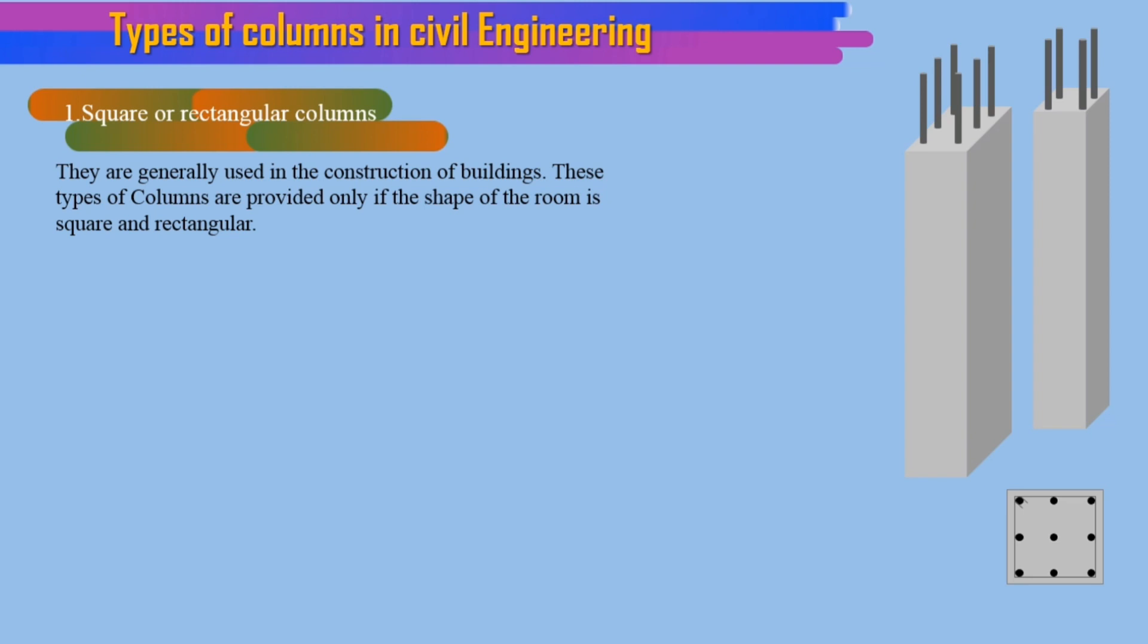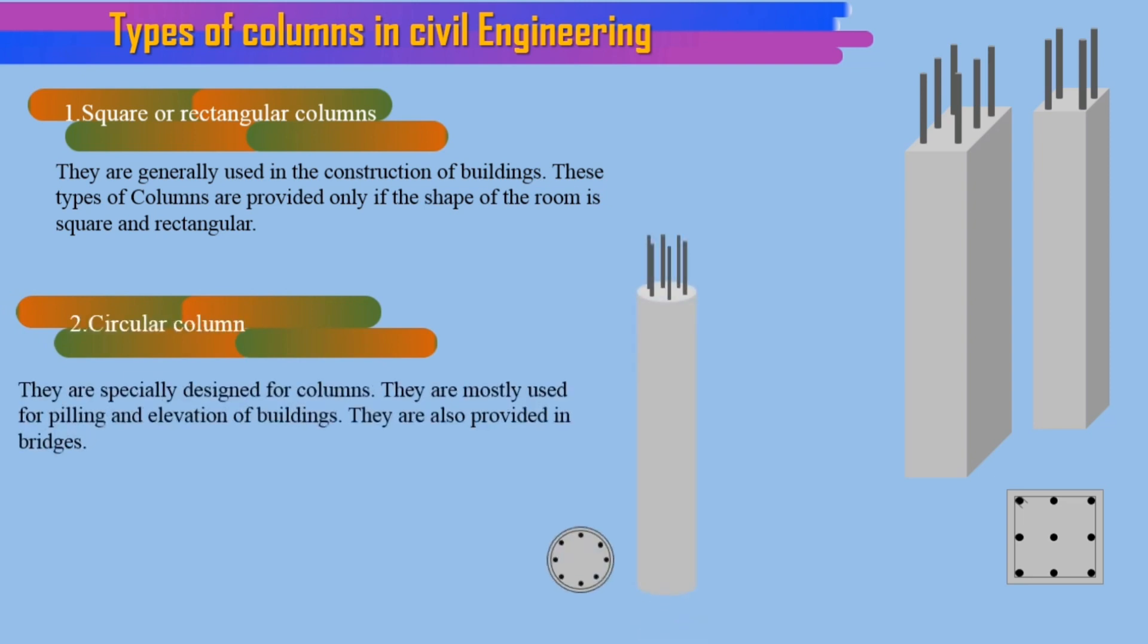2. Circular column. They are specially designed for columns. They are mostly used for piling and elevation of buildings. They are also provided in bridges.